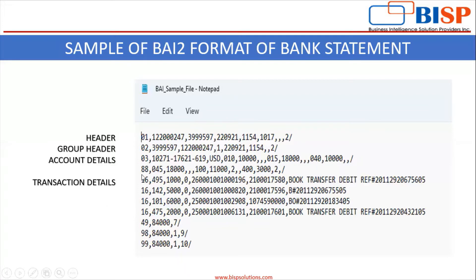Here you can see the transaction details. 16 is for transaction details. The value 495142101475 is the transaction code that we create in the application as per the bank codes. So this is the file format.